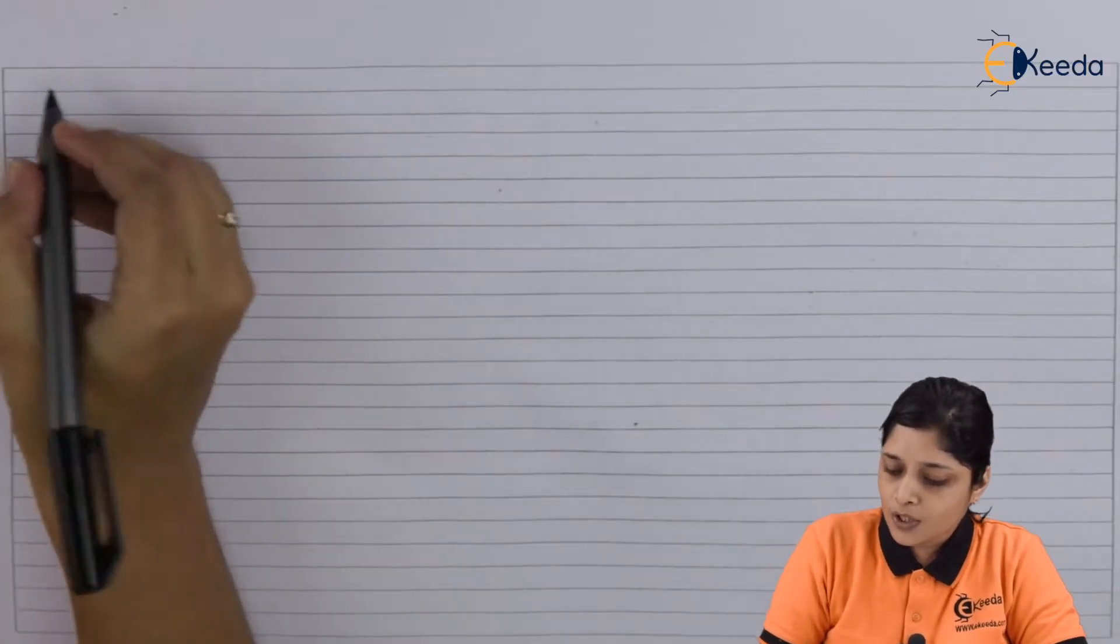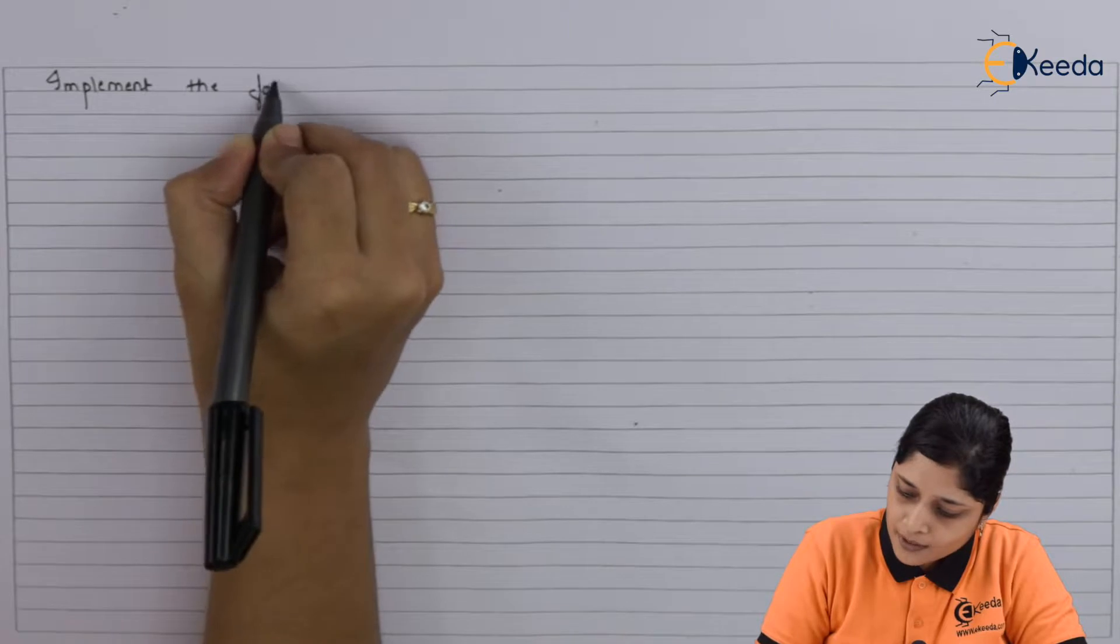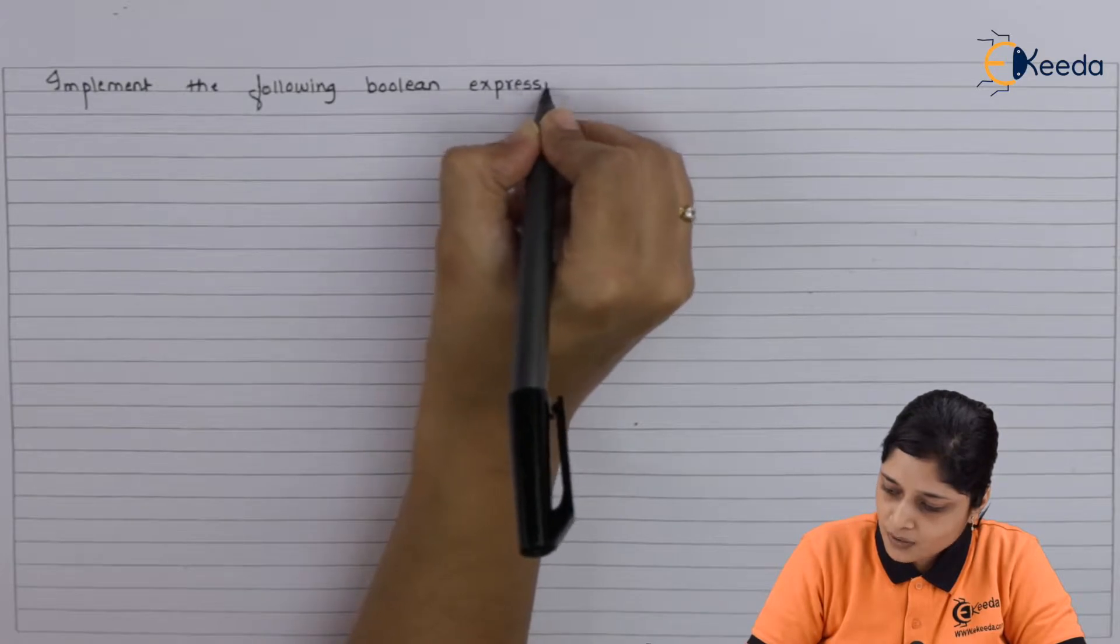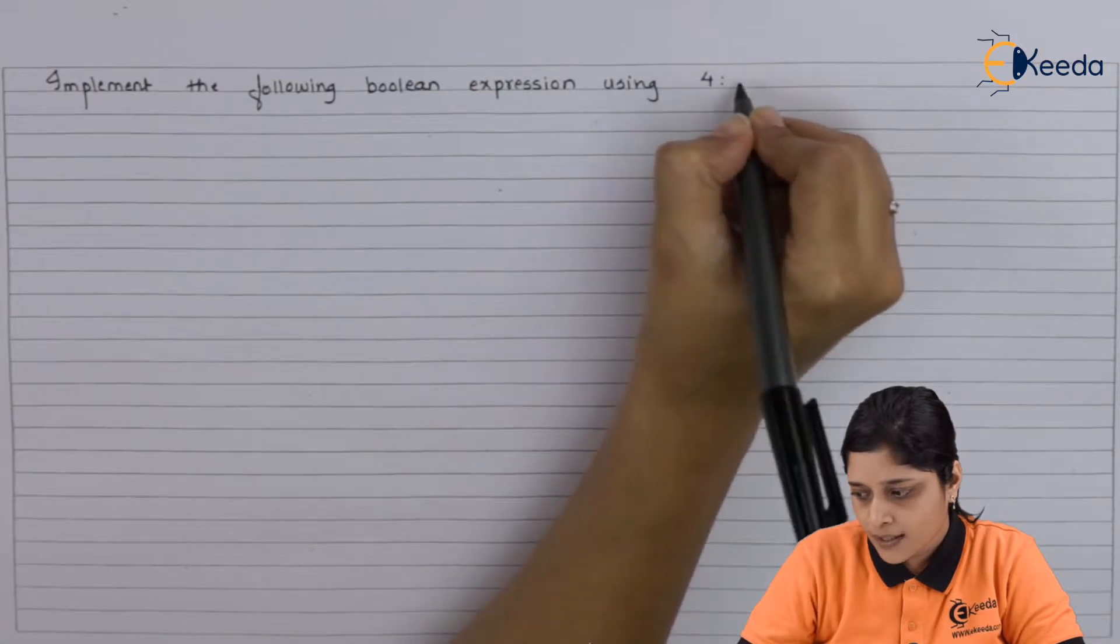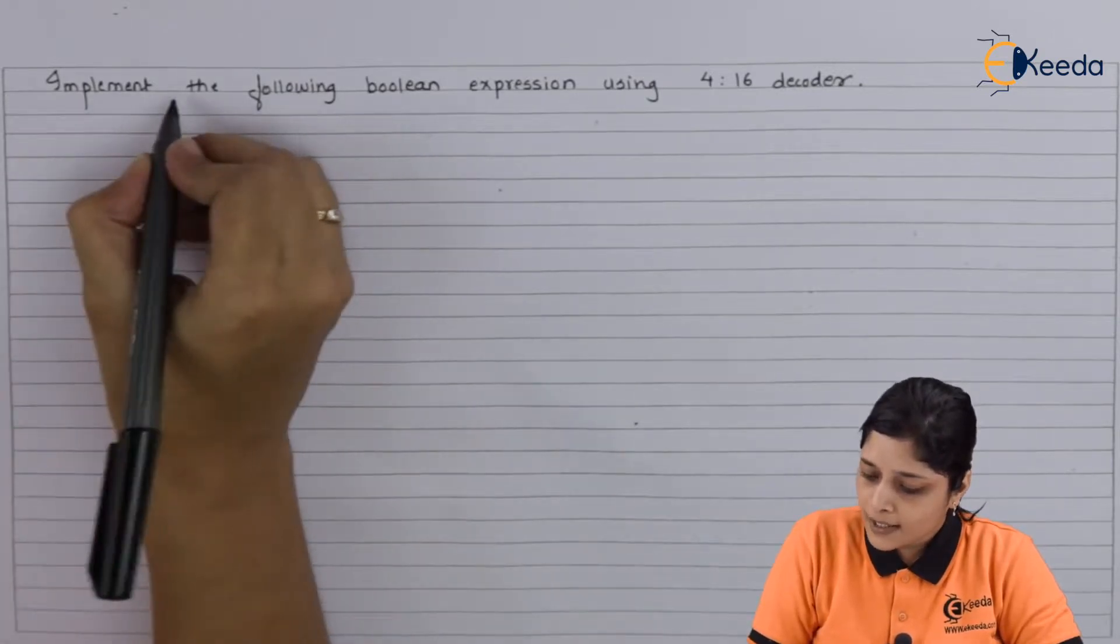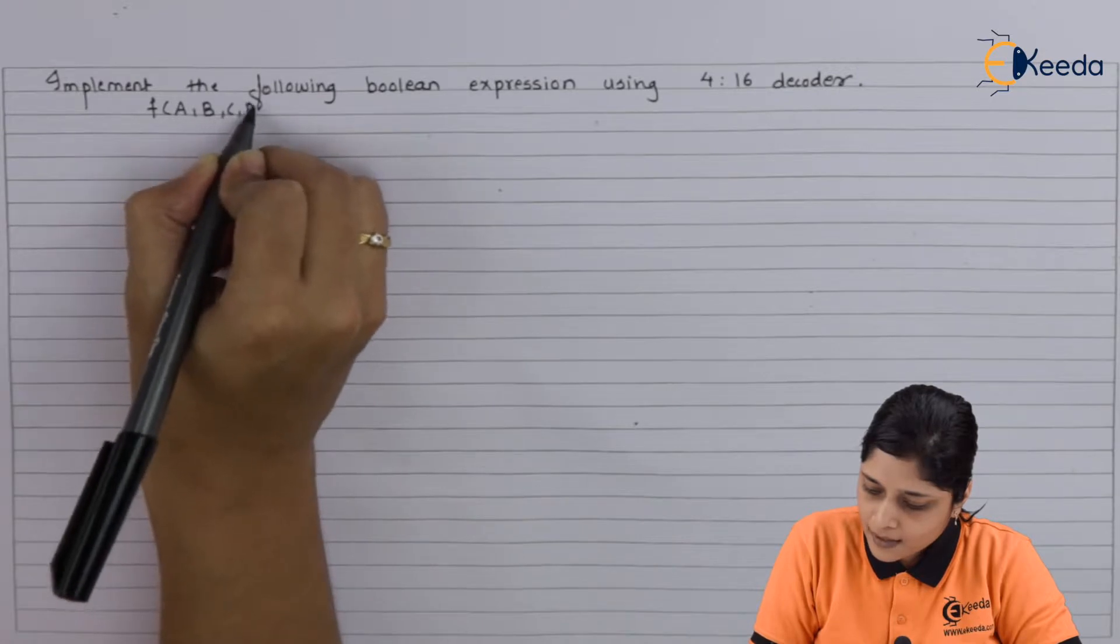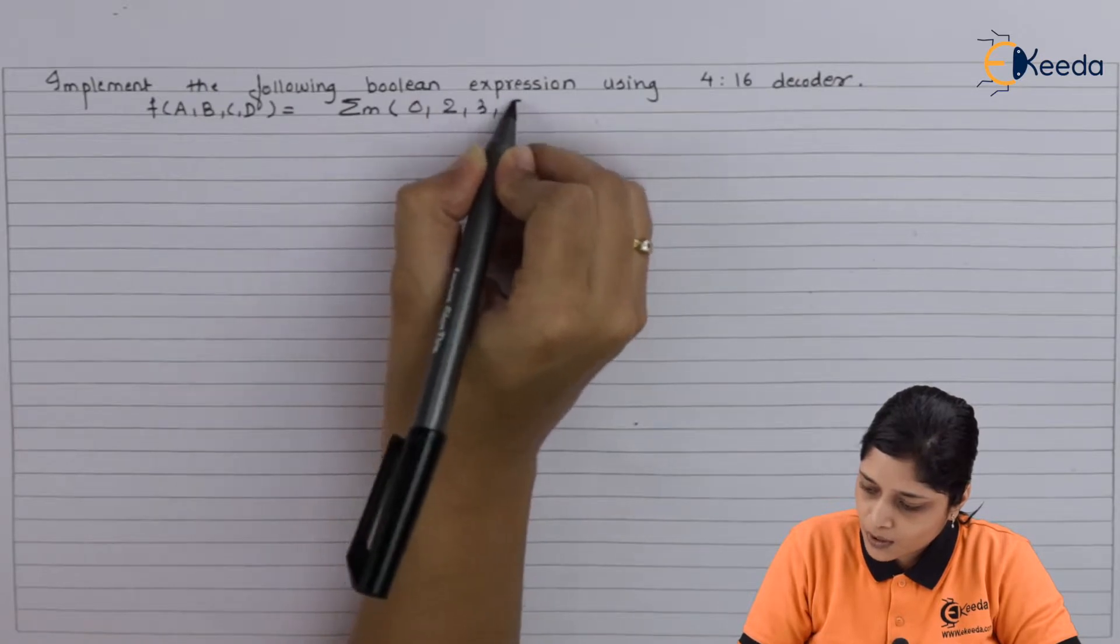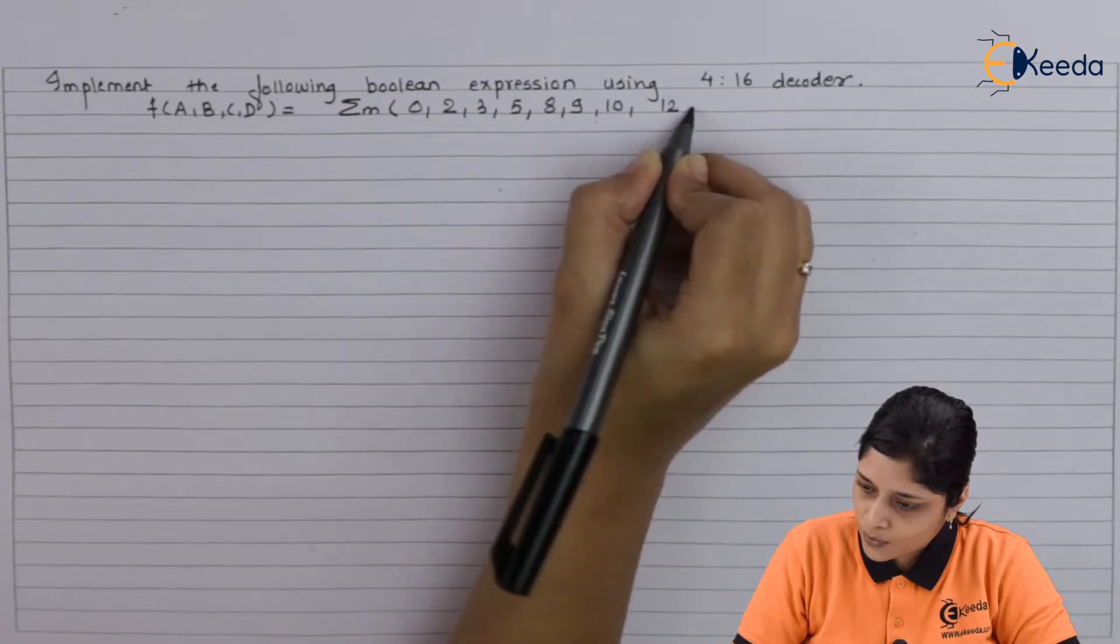So your question is: implement the following Boolean expression using 4 to 16 decoder. And your expression is f(a,b,c,d) equals to summation m(0,2,3,5,8,9,10,12,13).